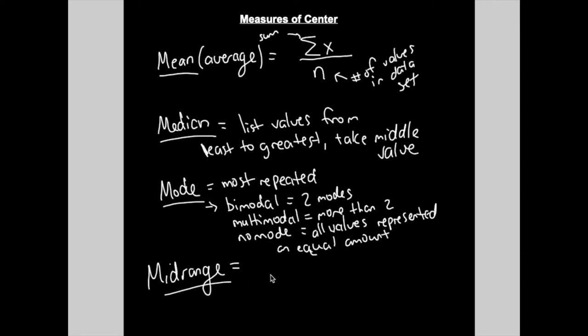The mid-range is just the maximum data value plus the minimum data value, divided by two.